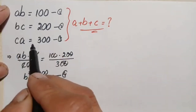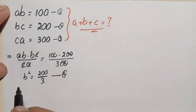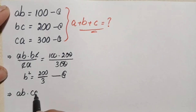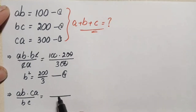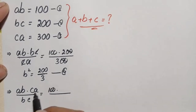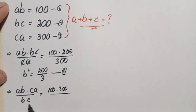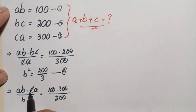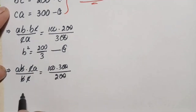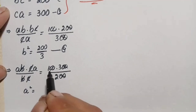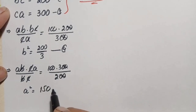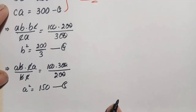Now we multiply equation one with equation three and divide the result by equation two. So a·b times c·a divided by b·c equals 100 times 300 divided by 200. We cancel the zeros, cancel c with c and b with b, giving a squared equals 300 divided by 2, which is 150. Let this be equation number five.